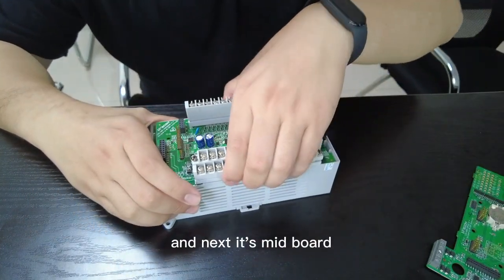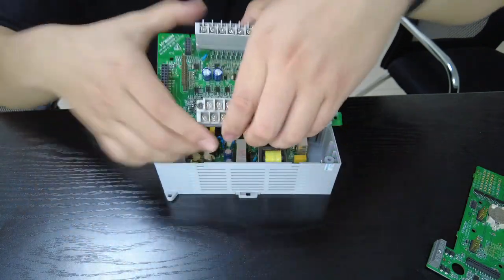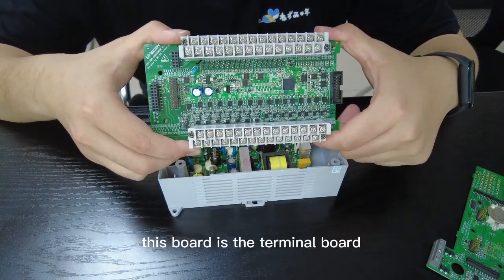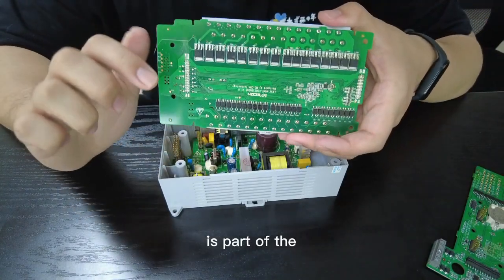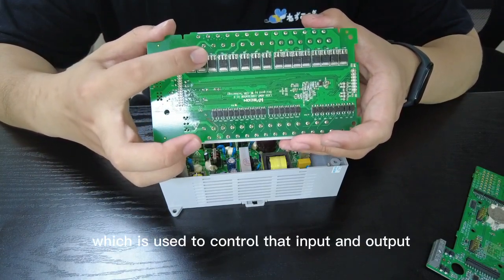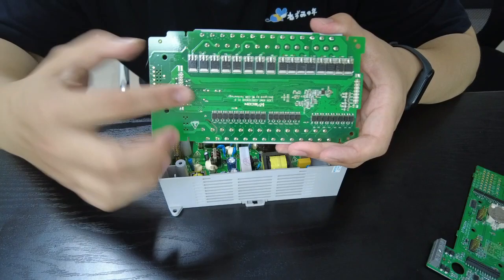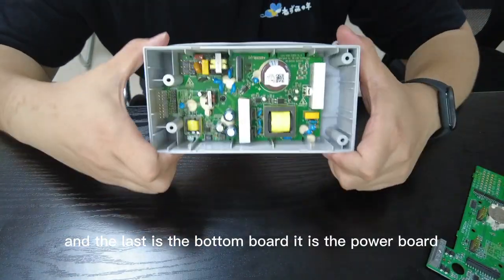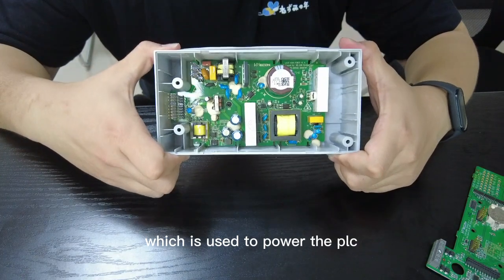And next is the mid-board. This board is the terminal board. And this part of the device is transistor, which is used to control the input and output terminal. And the last is the bottom board, which is the power board, which is used to power the PLC.